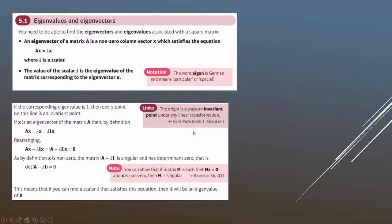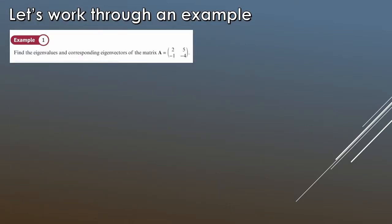We can also work out invariant points. The origin is always an invariant point under any linear transformation, and if the corresponding eigenvalue is one, then every point on that line is an invariant point. If x is an eigenvector of matrix A, then by definition Ax = λx = λIx. We can rearrange this, but the important thing is that we need to work out the determinant of (A − λI), where I is the identity matrix — two by two or three by three as appropriate.